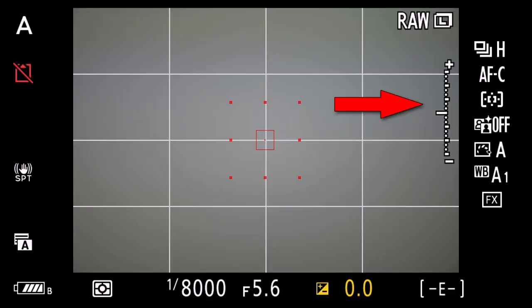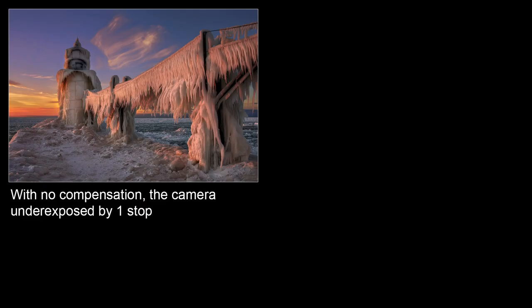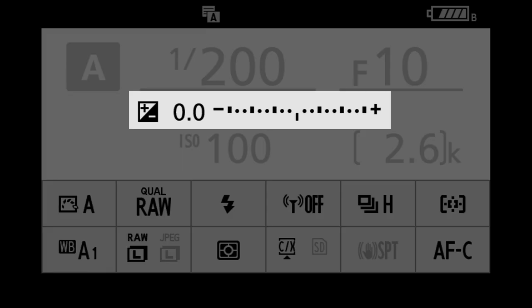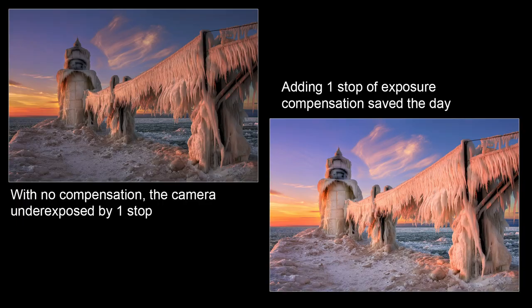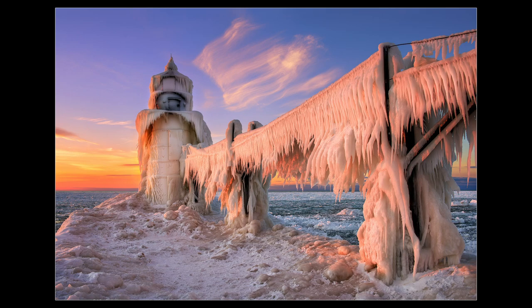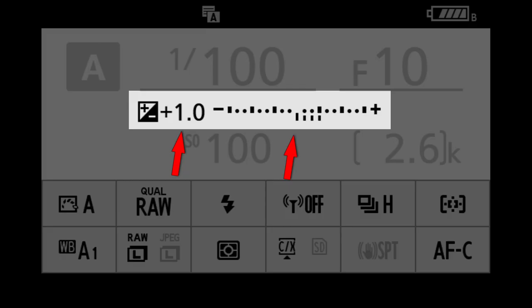That's where exposure compensation comes in. Let's say with our underexposed example, the camera is underexposing by one stop. We simply add one stop of positive exposure compensation to correct the error. This is typically done by pressing a button and turning a dial. Now when we shoot, the camera will add an additional stop of light to its exposure calculation, resulting in a proper exposure. Always remember to turn exposure compensation back to zero once you don't need it anymore. You can also use exposure compensation as a creative control if you want to deliberately make an image lighter or darker than normal.